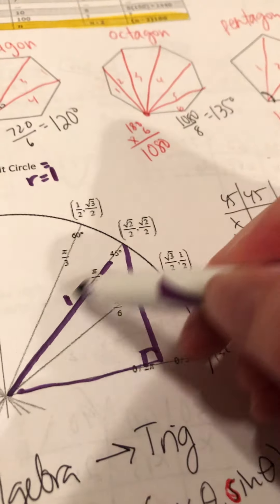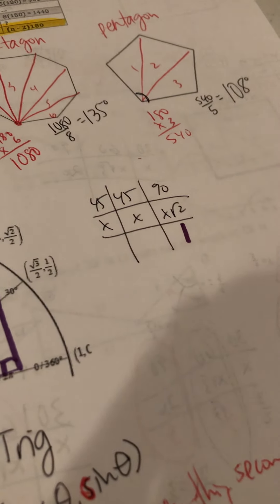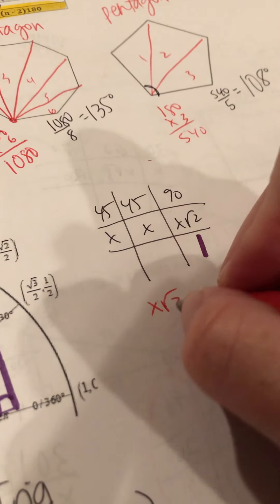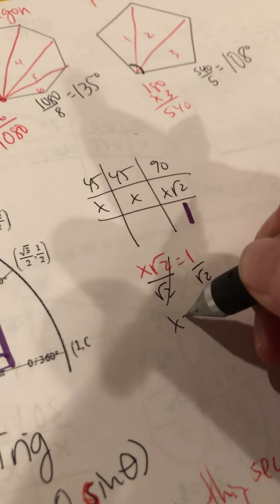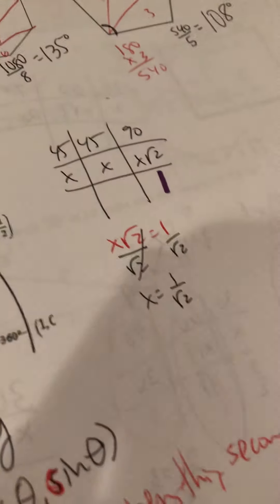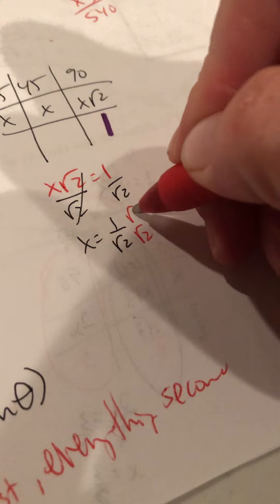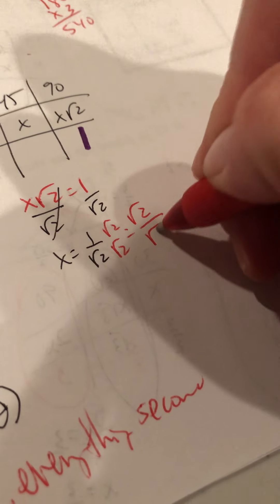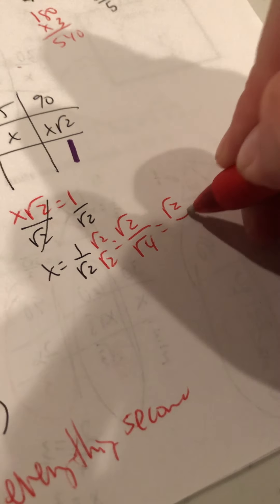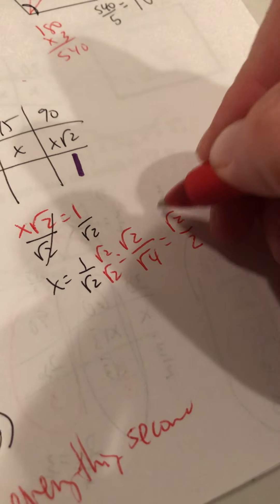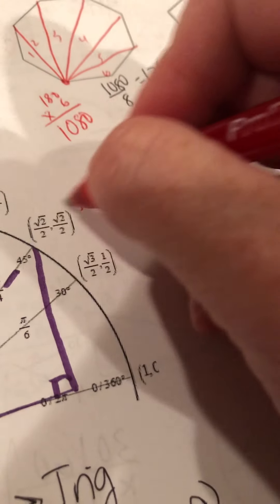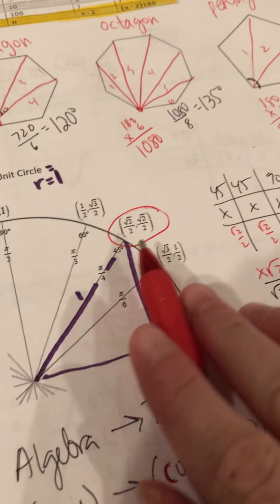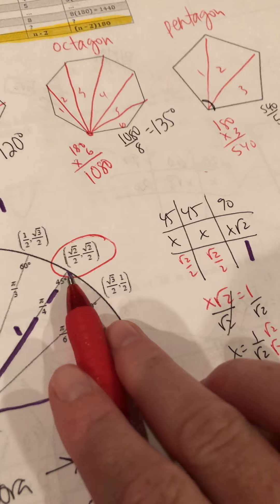Since the hypotenuse equals 1, we solve x√2 = 1. Dividing by √2 gives x = 1/√2, but we must rationalize the denominator by multiplying by √2/√2, giving √4 = 2 in the denominator. So x = √2/2. That's why every coordinate at a 45-degree angle will always be √2/2.